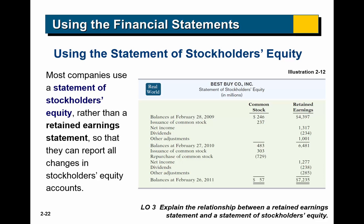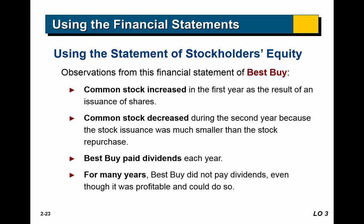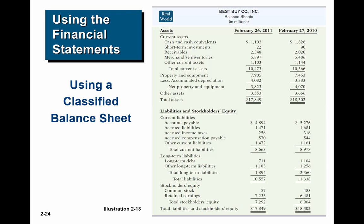Sometimes there's another statement called the statement of stockholders' equity. Companies like it because it provides more detail than the statement of retained earnings covered in Chapter 1. It breaks out common stock into one column and retained earnings into another, showing a beginning balance, any common stock issued, any net income added to retained earnings, any dividends paid, and ending balances. That is the statement of stockholders' equity.